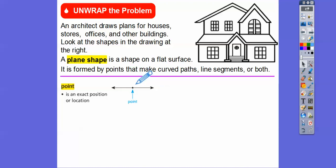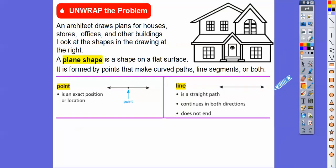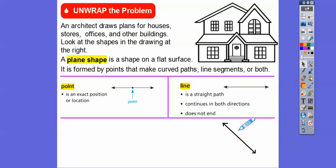The next thing we're talking about is a line. Lines are straight — they don't curve. Lines have arrows on both ends, meaning they go infinitely in both directions. We can draw lines going all kinds of ways; they don't have to go flat. We can draw a diagonal line, and as long as it has arrows on it, it goes infinitely forever in both of those directions.